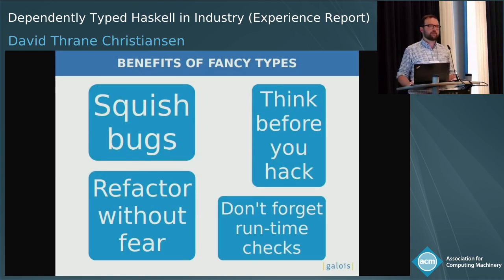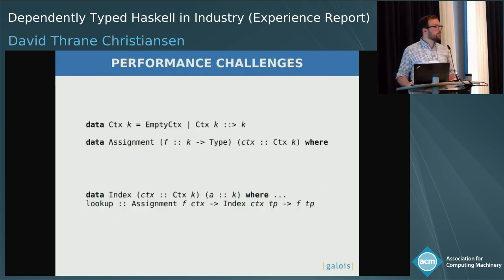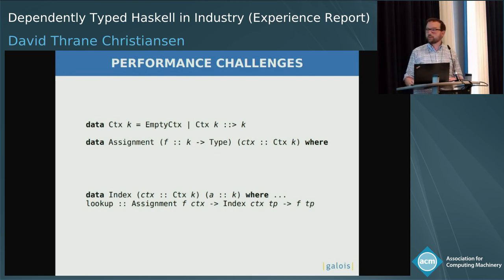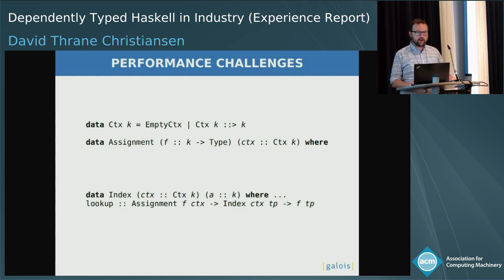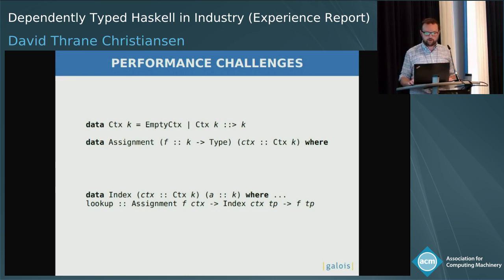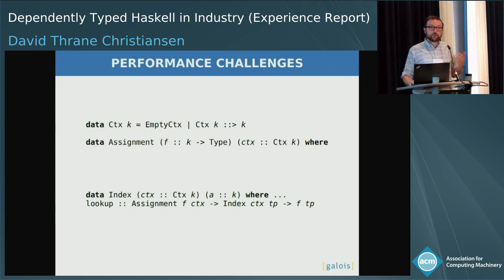But there are some costs. One of them is performance. Crucible needs to go fast. Taking a look at that type-level snoc list context, we also have a runtime thing called an assignment. An assignment takes some family indexed by the kind of whatever is inside of the context, and assigns at each position something with that family instantiated at the appropriate pointwise element. This lets us have a safe notion of an index into an assignment and a lookup operator — note the lack of Maybe or Either or exception on the right-hand side, because we know it's there and we can just go get it.